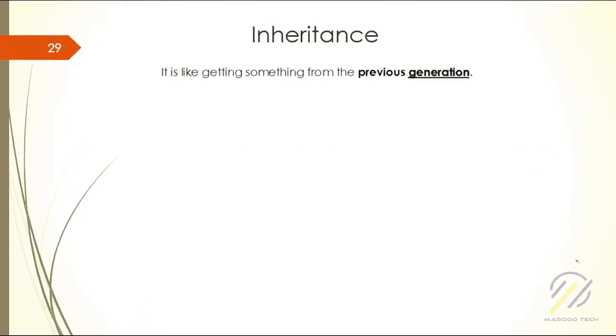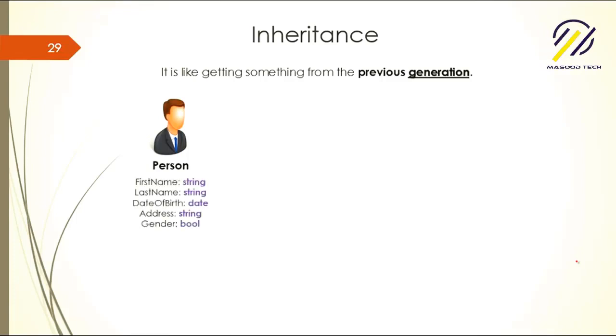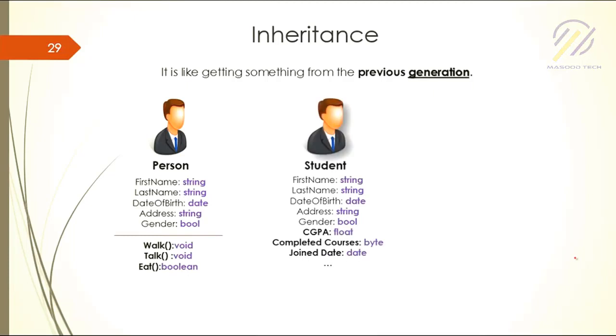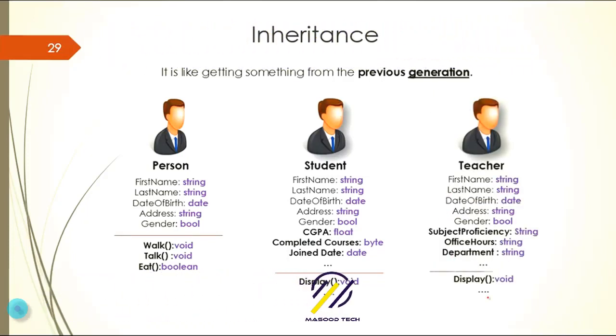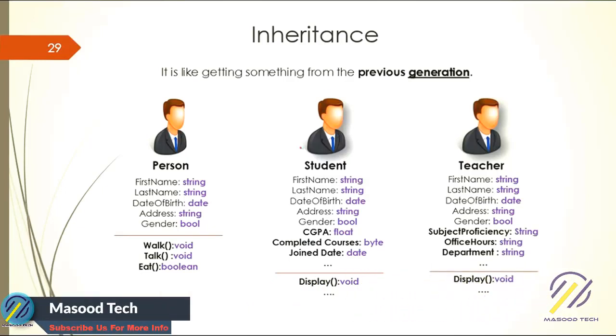Now we hit the inheritance topic, our third most important topic in object-oriented programming. Inheritance is something like getting something from previous generation. Let's see a scenario where inheritance is not there. We have these properties of a person—a person could walk, talk, and eat. A student also has the same type of properties—first name, last name, date of birth, address, gender—but extra fields like CGPA, completed course and behavior like display. A teacher also has first name, last name, date of birth and a display method.